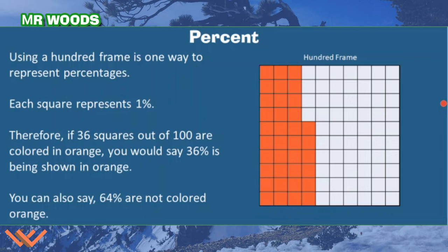You can also say that 64% are not colored orange — counting the remaining squares gives 60 plus 4 more, which is 64. See how that works for the hundreds frame?